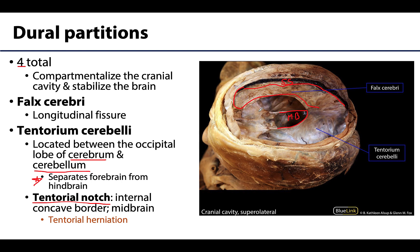In certain pathological conditions like brain swelling or space-occupying lesions, portions of the brain such as the temporal lobe of the cerebrum — which is not too far from the tentorial notch — will actually herniate into the tentorial notch. This is called tentorial herniation, and it will compress the contents in this region. Since the midbrain sits in the tentorial notch, it can affect neurovascular structures such as the oculomotor nerve (cranial nerve III) and the posterior cerebral artery, leading to distinct clinical presentations.